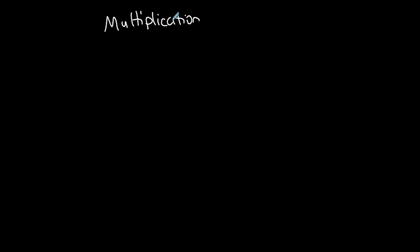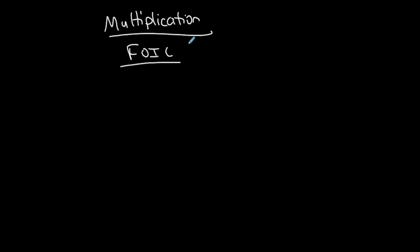Multiplication of complex numbers is important because you need to know this for division. But if you know how to FOIL — first, outer, inner, last — you know how to multiply complex numbers. That's the same idea, unless one of the complex numbers is missing the real part. And don't forget: i squared is equal to negative 1. Now we're going to use it.